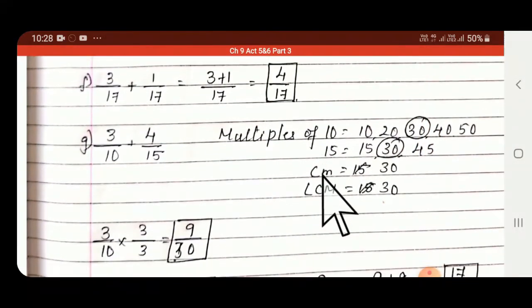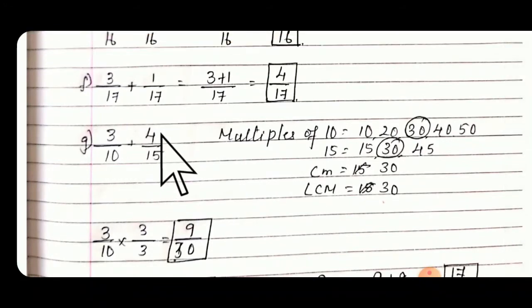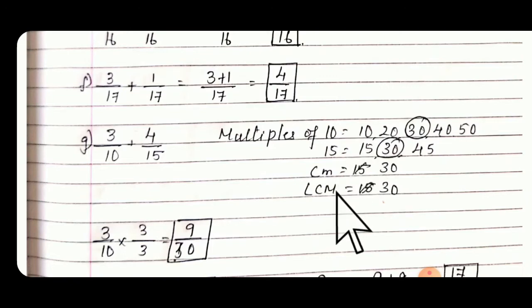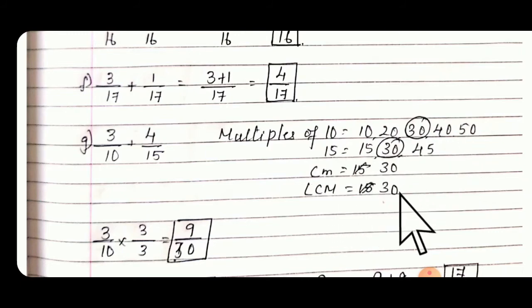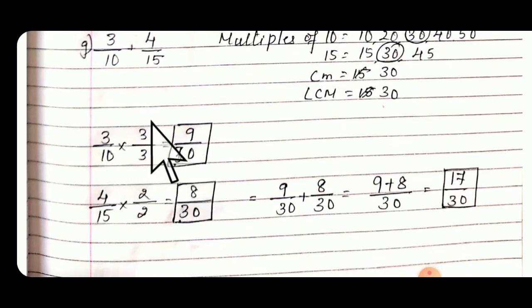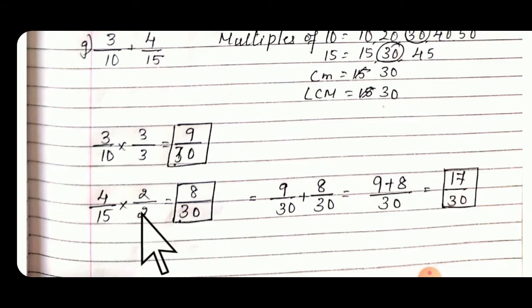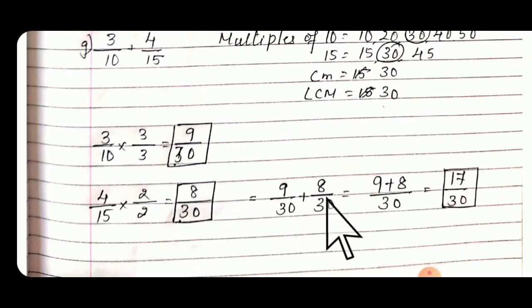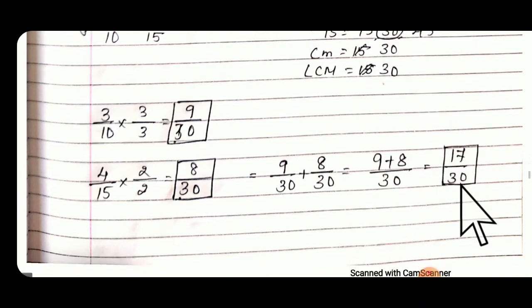From F to G it is different: 3/10 + 4/15. You cannot add directly, so first convert into like fractions. To convert, first find the LCM of the denominators 10 and 15. The common multiple is 30, so LCM is 30. Convert: 3/10 × (3/3) = 9/30, because 10 × 3 = 30 and 3 × 3 = 9. For 4/15 × (2/2): 15 × 2 = 30, so 4 × 2 = 8/30. Now 9/30 + 8/30 — keep the denominator same — 9 + 8 = 17/30.